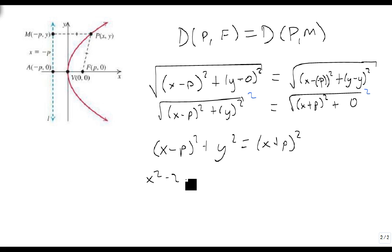If we use the formula, we get x squared minus 2xp plus p squared, and that's going to be equal to x squared plus 2xp plus p squared. We're going to solve for y squared, so we're going to subtract x squared, add 2xp, and subtract p squared, and that gives us y squared equals 4xp.